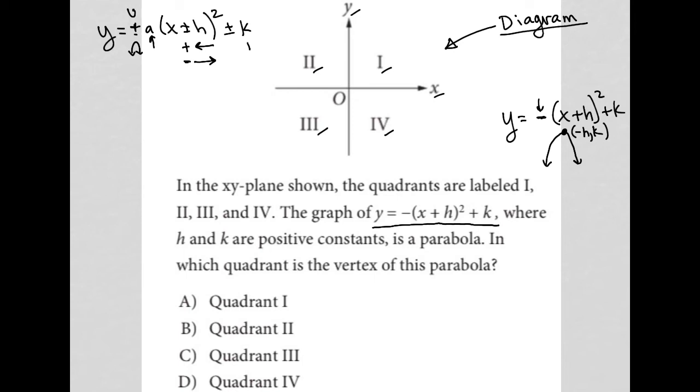And then if we have a positive for the k value, we're shifting up k units. And negative for k value, we're shifting down k units. So that's how I know this information.